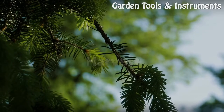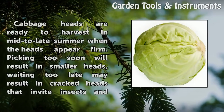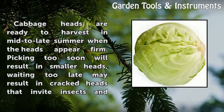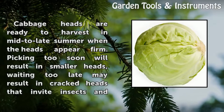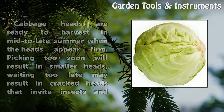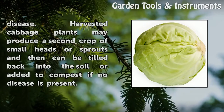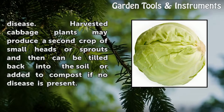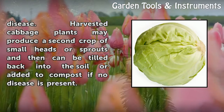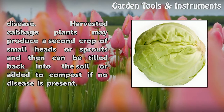Harvest. Cabbage heads are ready to harvest in mid to late summer when the heads appear firm. Picking too soon will result in smaller heads; waiting too late may result in cracked heads that invite insects and disease. Harvested cabbage plants may produce a second crop of small heads or sprouts, and then can be tilled back into the soil or added to compost if no disease is present.